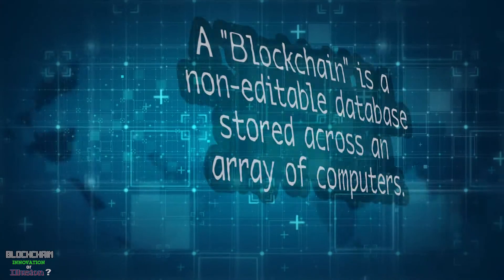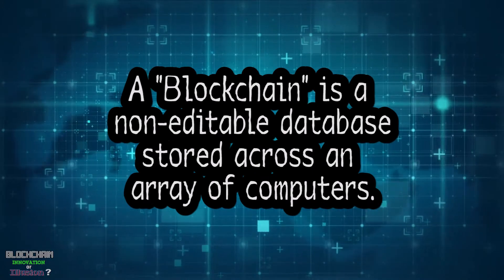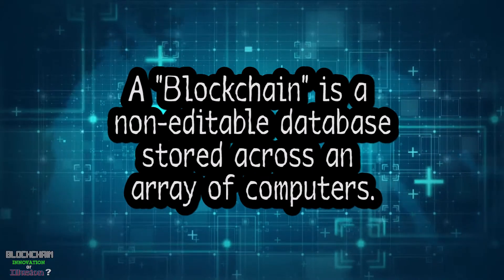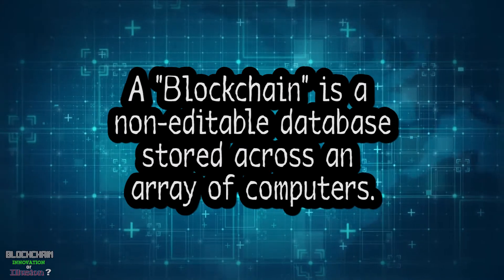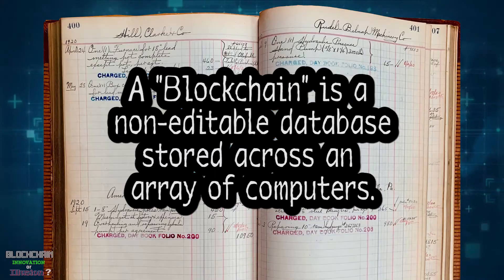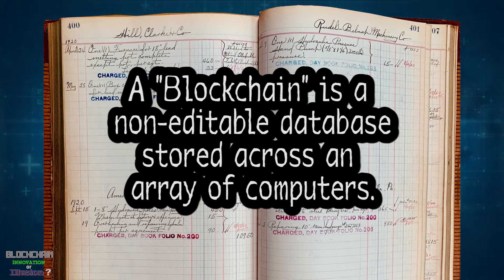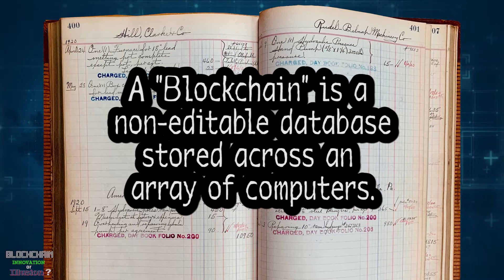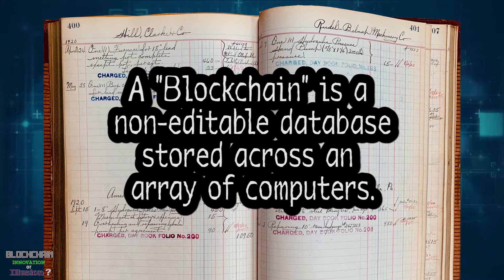A blockchain is a non-editable database stored across an array of computers. That's basically it — it's just a database, often referred to as a ledger, which is in accounting terminology a list of transactions usually in sequential order. On a given date, person Y transferred commodity Z to person Z — that's primarily what goes in a ledger.